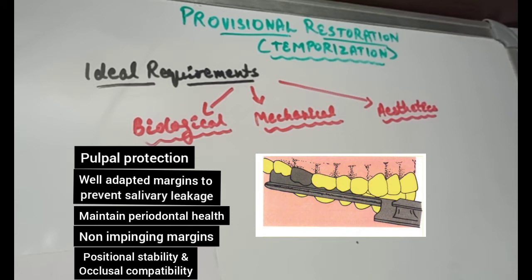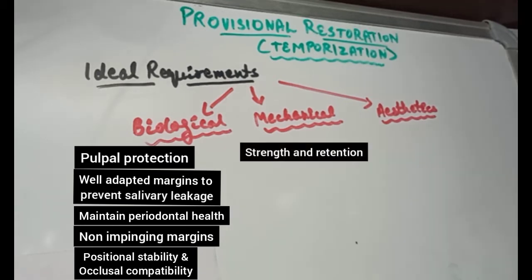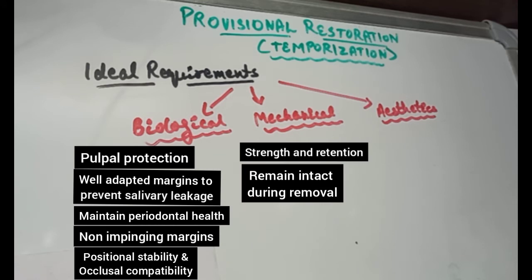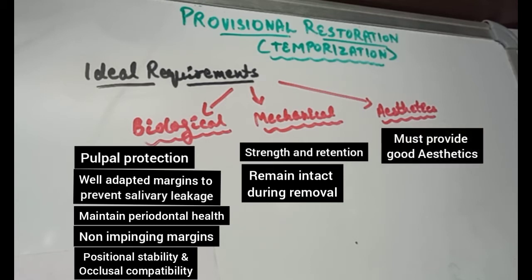If a provisional restoration does not ensure positional stability, tooth movement can occur and additional treatment will be necessary. The next requirement is strength and retention — the restoration must withstand the forces to which it is subjected without breaking or coming off, and should remain intact during removal so it can be reused if needed. The last requirement is aesthetics — in some cases the restoration must provide good aesthetics, particularly in anterior and premolar regions.